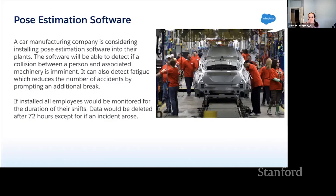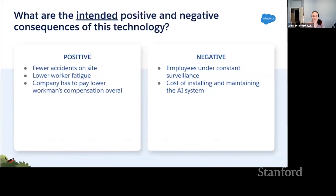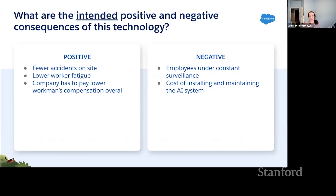On the positive side of the intended consequences: fewer accidents on site, lower worker fatigue, and the company pays lower workers' compensation overall. I'm looking at benefits to both the individual — very few people want to get hurt — and to the company. But some negatives are that employees are under constant surveillance, and there is a cost to install and maintain the AI system.